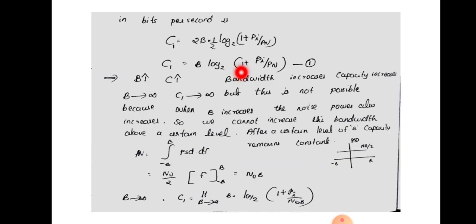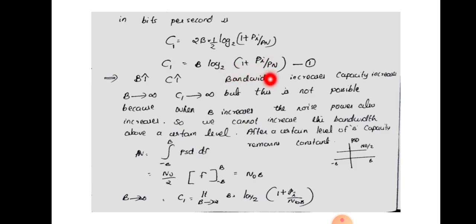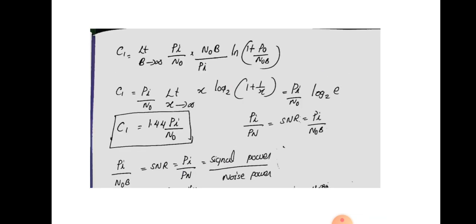When bandwidth increases, noise power also increases. The noise power Pn is obtained by integrating the power spectral density over the bandwidth: Pn = ∫₋B^B (N0/2) df = N0/2 · [f] from −B to +B = N0 · B. So when bandwidth B tends to infinity, the noise power Pn = N0·B also tends to infinity, and C1 becomes limit as B→∞ of B · log₂(1 + Pi/(N0·B)).